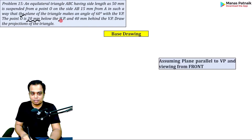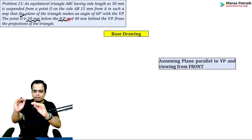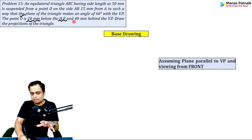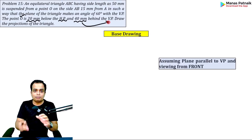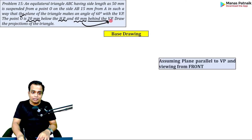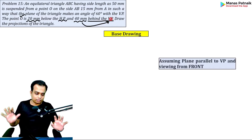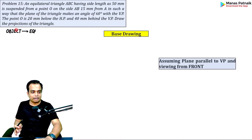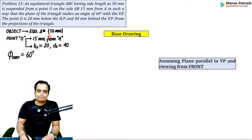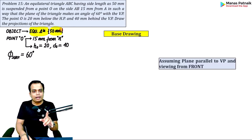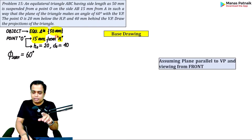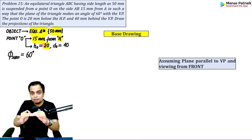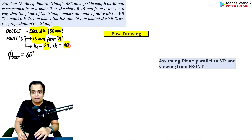Point O is 20 mm below HP and 40 mm behind VP, making it a clear case of the third quadrant. Let me write down all the data: equilateral triangle, all sides 50 mm; point O is on side AB, 15 mm from A; point O is 20 mm below HP and 40 mm behind VP.